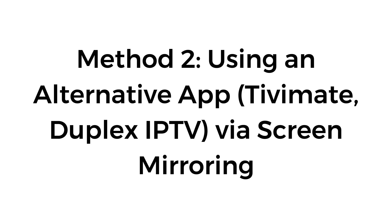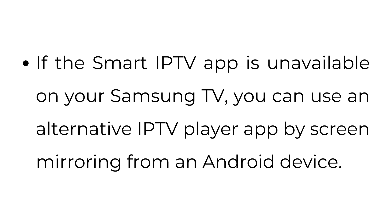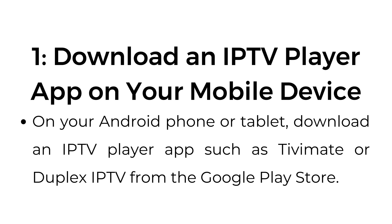Method number two: using an alternative app — TV Mate or Duplex IPTV via screen mirroring. If the Smart IPTV app is unavailable on your Samsung TV, you can use an alternative IPTV player app by screen mirroring from an Android device. Step number one: download an IPTV player app on your mobile device. On your Android phone or tablet, download an app such as TV Mate or Duplex IPTV from the Google Play Store.